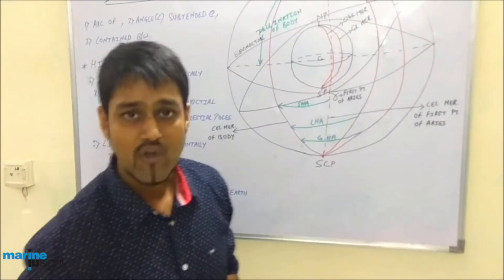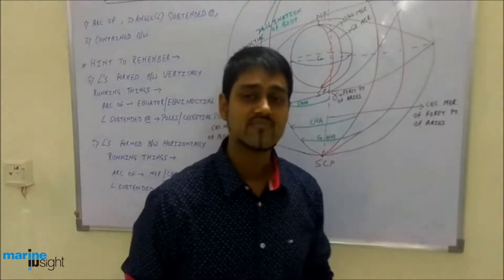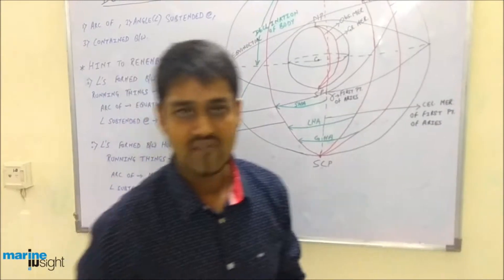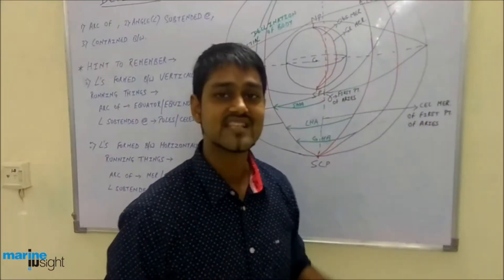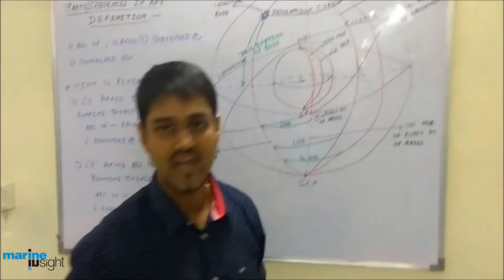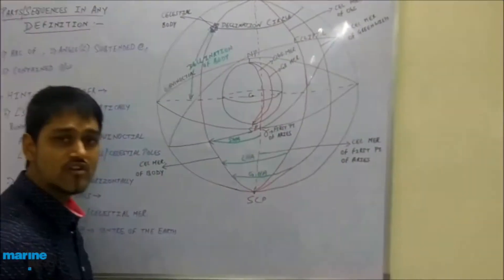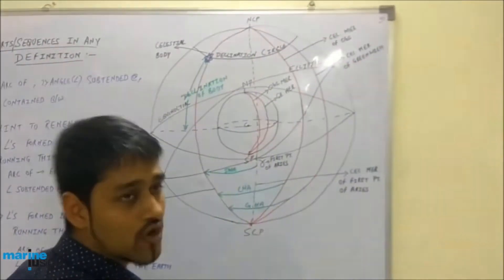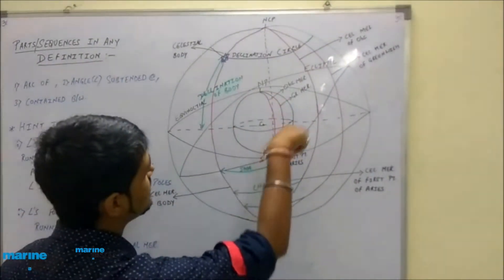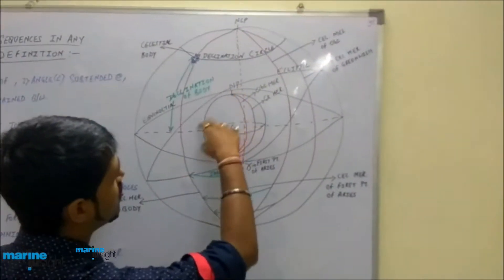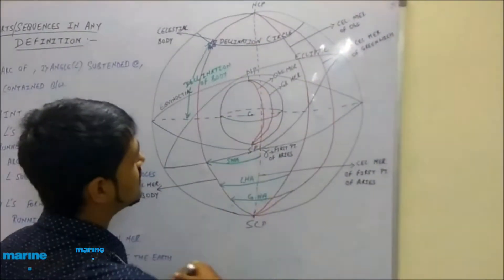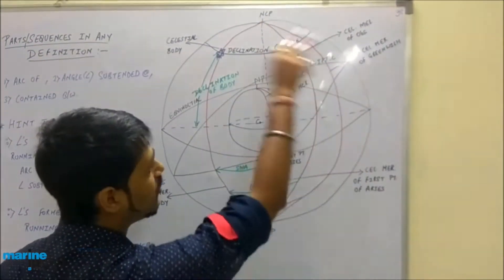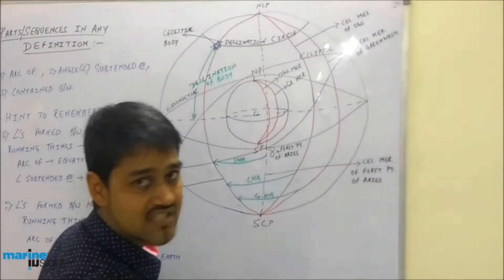In today's topic, I am going to cover one which is used very commonly in our field — the celestial sphere. I am going to explain first what I have drawn here. This interior circle is the earth's sphere and the exterior one is the celestial sphere.